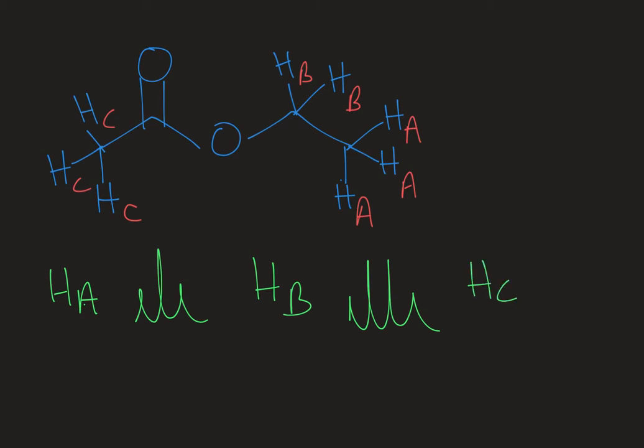And then lastly, I would have HC, and that would be a singlet because it doesn't have any protons on the neighboring carbon atom. So when we say neighbors, we're referring to the number of neighboring protons on that carbon atom that's next door.